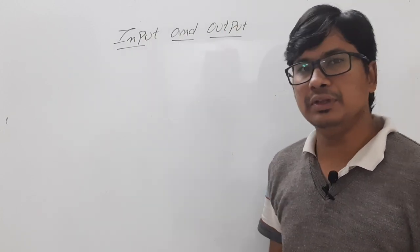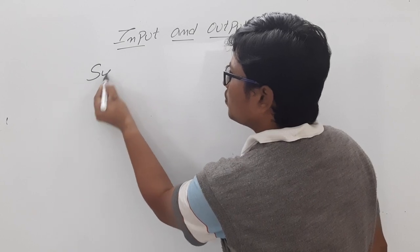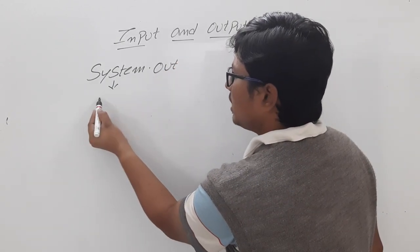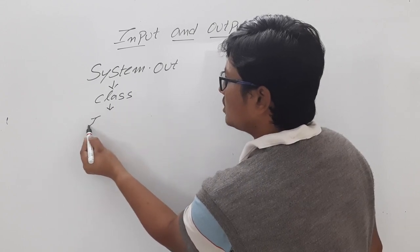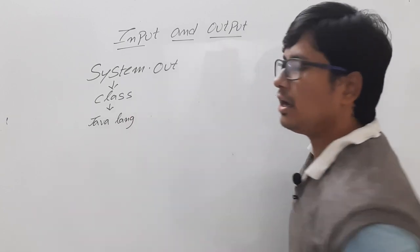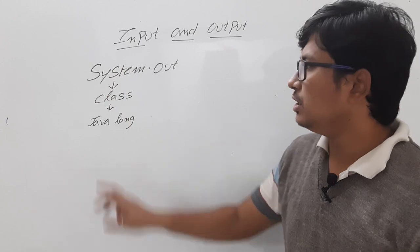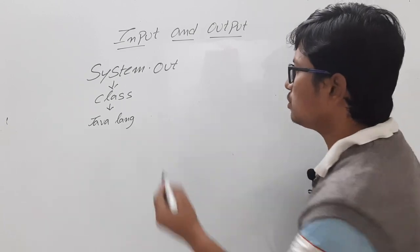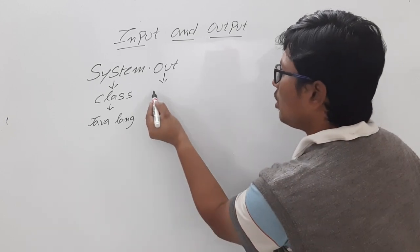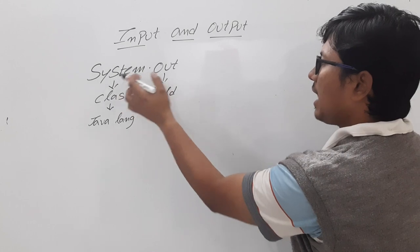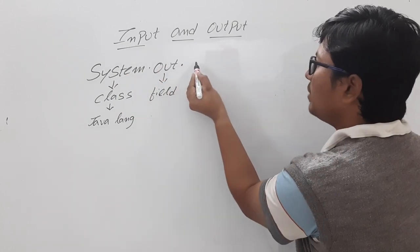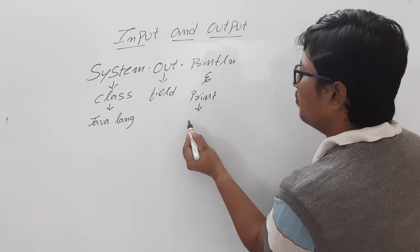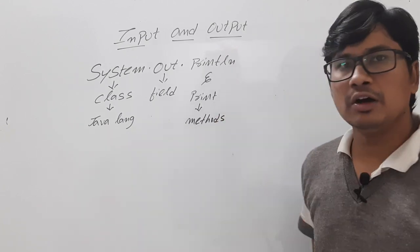First I will discuss in detail about the output, then I will discuss about the input. If you want to display the output, we need to use System.out, where System is a class available in the package called java.lang. In the java.lang package there is a class called System. For displaying the output we use a field called out. System is a class, out is a field, and we have two methods called println and print.